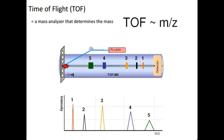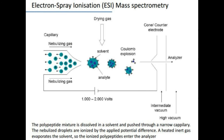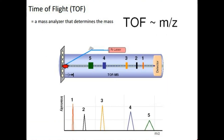Another technique to create ions from proteins is called electrospray ionization mass spectrometry, which calls for the polypeptide mixture to be dissolved in a solvent and then pushed through a very narrow capillary. These droplets are then passed through a high voltage space and analyzed under the mass spectrometry machine.